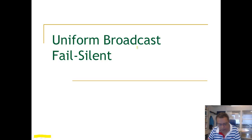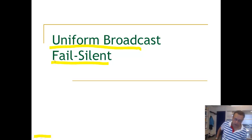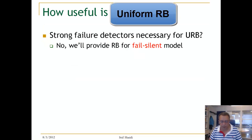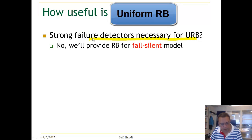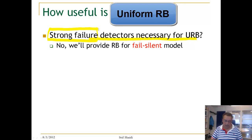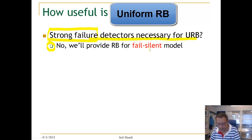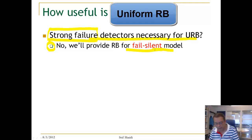Let us look at the uniform broadcast in the fail-silent model. As we have seen before, a strong failure detector was used in the previous algorithm to guarantee uniformity. So do we really need a strong failure detector? The answer is no — we will provide a reliable broadcast that is uniform and does not need a failure detector, which means we can use it in the fail-silent model.